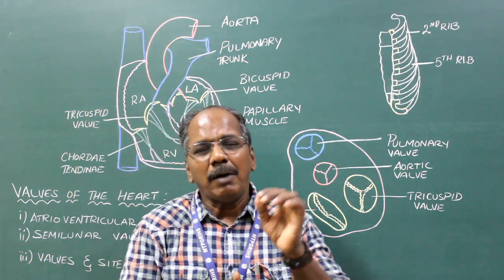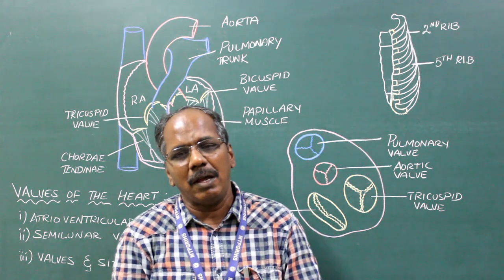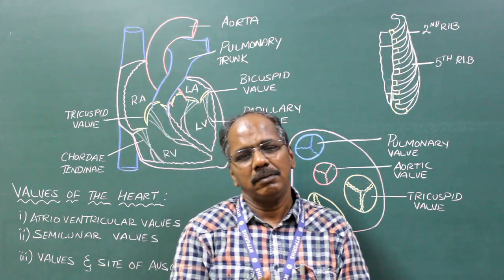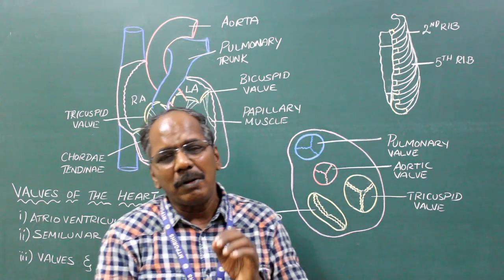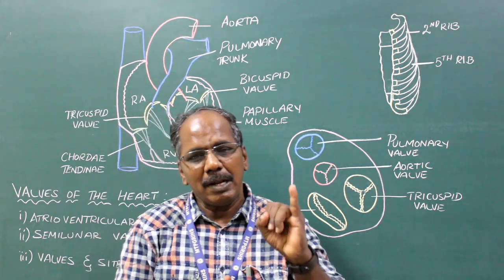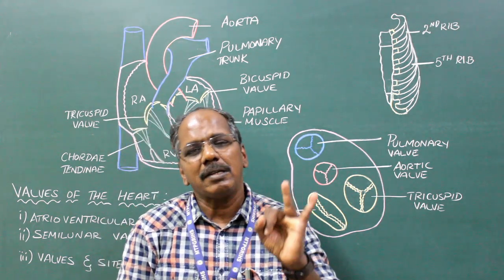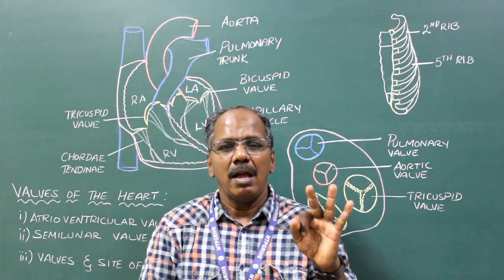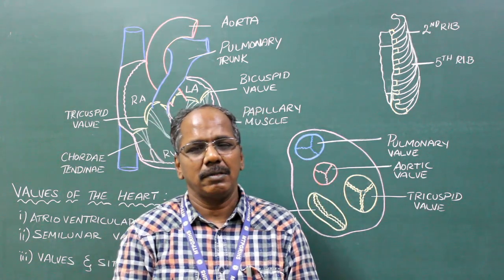The abnormal heart sounds are known as murmurs. They are produced due to valvular defects such as tricuspid stenosis, aortic stenosis, and pulmonary stenosis.